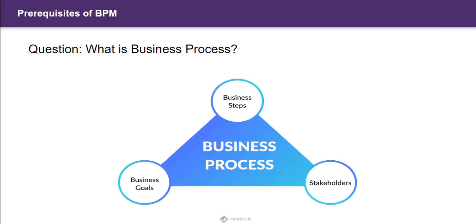Let me give you a crisp and clear one-line definition that will clear your ambiguity on the difference between a normal process and a business process. A business process is very different from a normal process. A normal process may or may not have business outcomes — it might or might not affect the business model or day-to-day operations of a business. But a business process is directly related to the performance of the business.